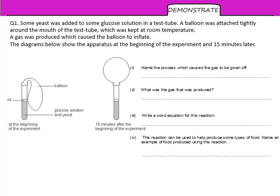Now for exam-style questions. Question one: some yeast was added to a glucose solution in a test tube. A balloon was attached tightly around the mouth of the test tube, kept at room temperature. A gas was produced which caused the balloon to inflate. You must name the process which caused the gas to be given off, identify the gas produced, write a word equation for the reaction, and name an example of food produced using this reaction.